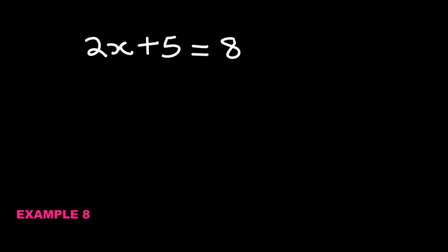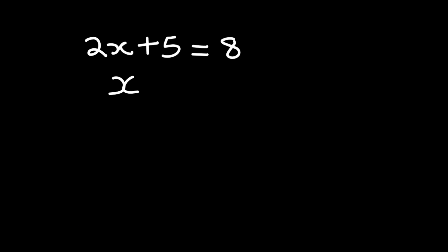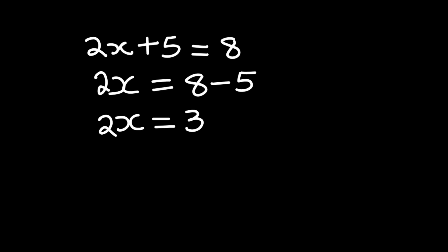If we have 2x plus 5 equals 8, our aim here is to isolate x. We are going to leave 2x here, and on the other side we are going to have 8. Plus 5 will move across the equal sign and become minus 5, giving us 2x is equal to 3. Next, the 2 will move across the equal sign, and because the 2 is multiplying x, it will divide 3 on the other side of the equal sign. And x is now 3 over 2.